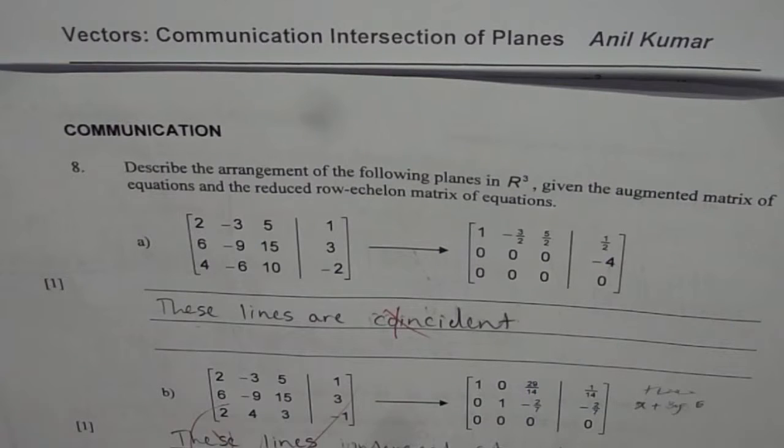Describe the arrangement of the following planes in R³ given the augmented matrix of equations and the reduced row-echelon matrix of equations.